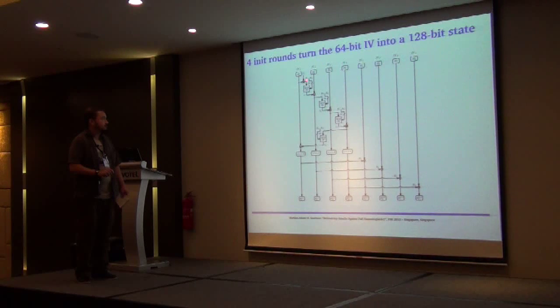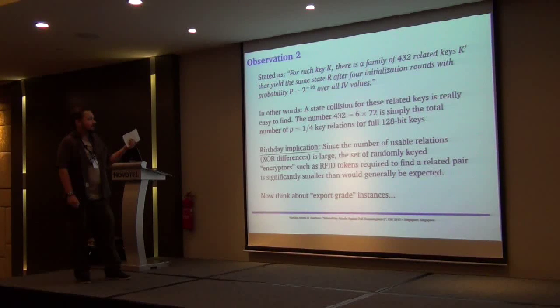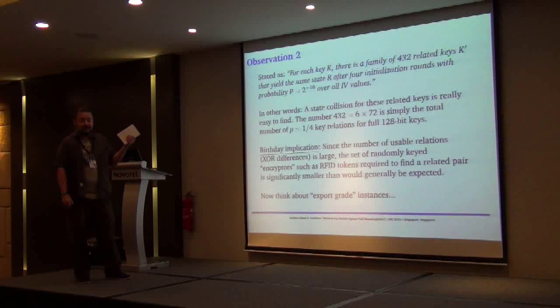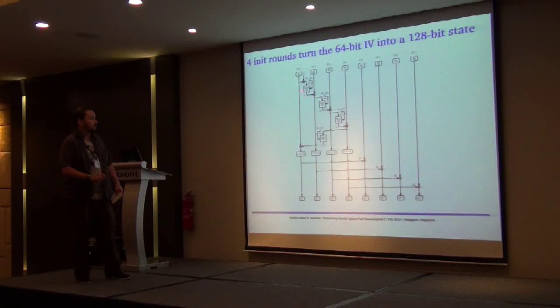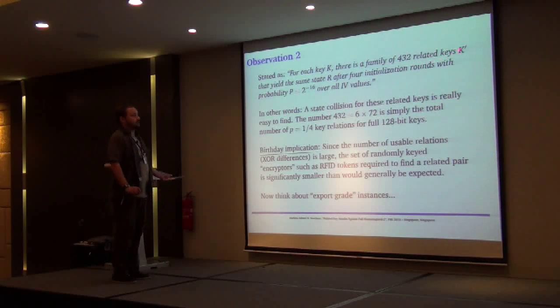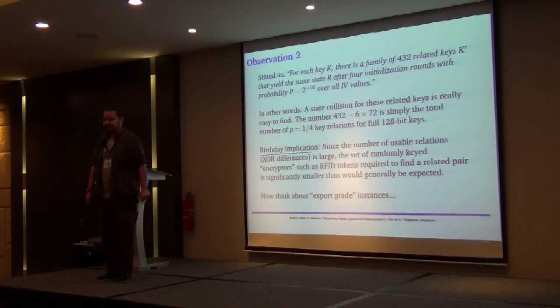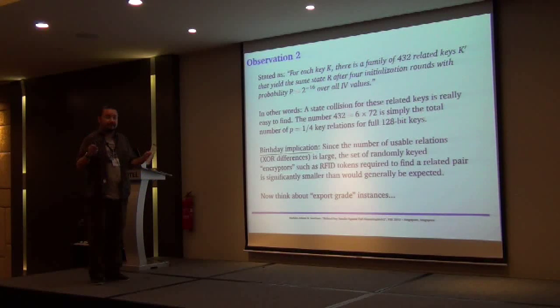Because the key schedule is so simple, we actually know that there are related keys with probability one over 65,536 that actually produce the same IV values after four rounds. If we have a related key difference here, these subkeys are the same, and here again that's where it happens. The number of related keys, or the related key family, is the highest probability related key family. There are others with lower probability but still perfectly realistic. I'm just focusing on the easiest related key families.